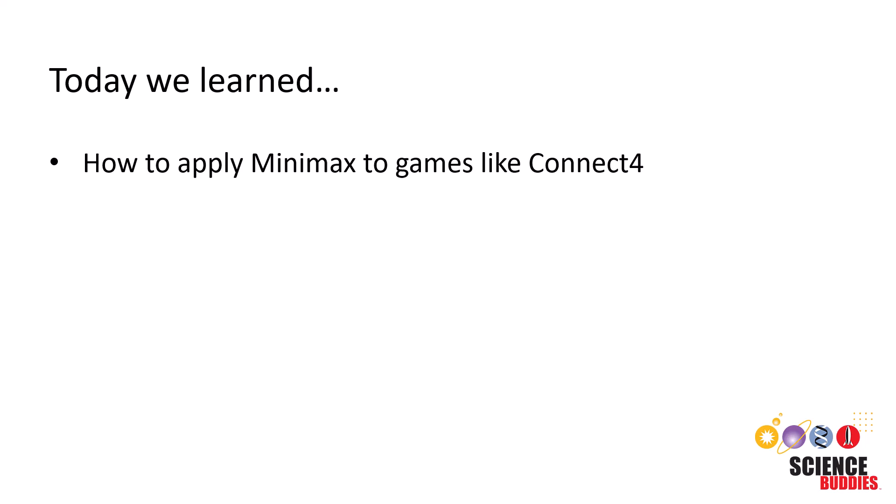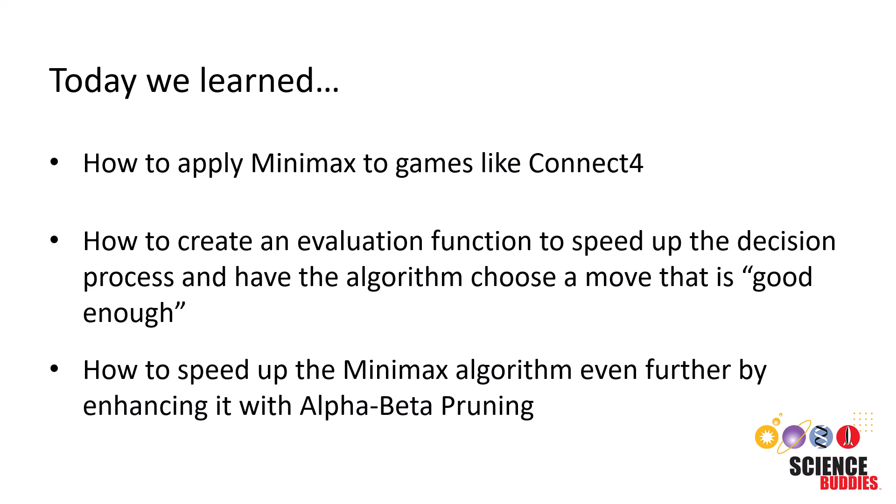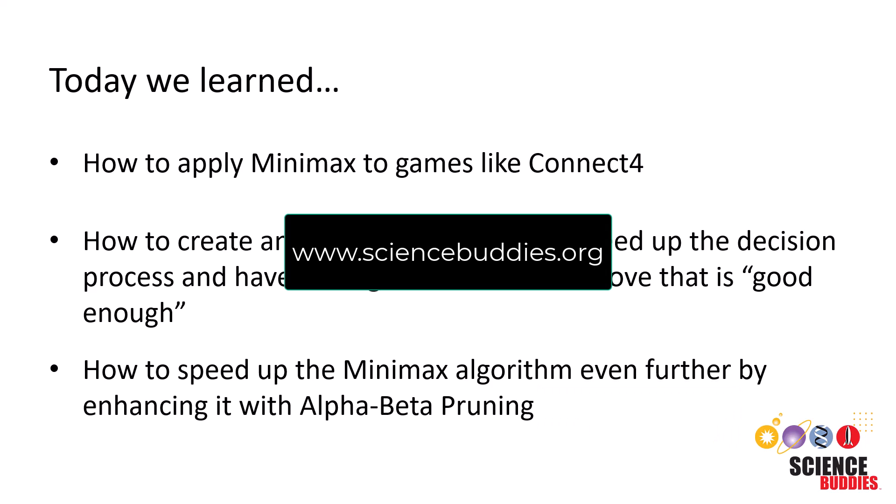And with that, we come to the end of our video on the minimax algorithm with alpha beta pruning. Today, we learned how to apply minimax to games like Connect Four, how to create an evaluation function to speed up the decision process and have the algorithm choose a move that is good enough, and how to speed up the minimax algorithm even further by enhancing it with alpha beta pruning. For a selection of minimax projects, please refer to the links in the description below. And for a thousand other projects for all areas of science and engineering, visit our website www.sciencebuddies.org Thank you.